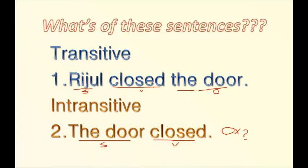If you look at these two sentences carefully, you'll find the same verb 'close' is used once as a transitive verb and once as an intransitive verb. So the verb 'close' can be used both ways. Even more interesting is that the object 'the door' from the first sentence is used as the subject in the second sentence — the verb accepts the same noun once as object and once as subject.